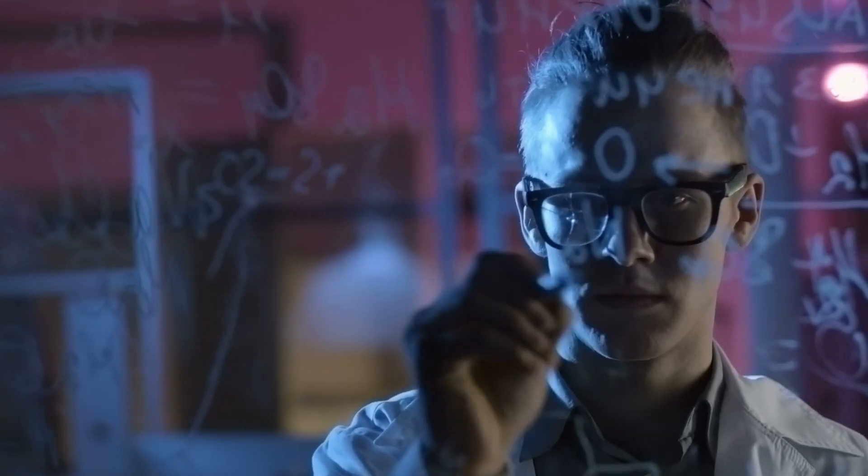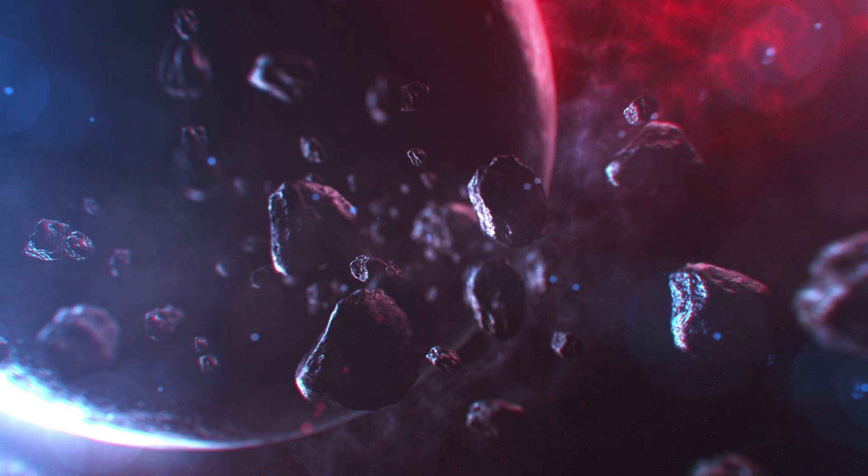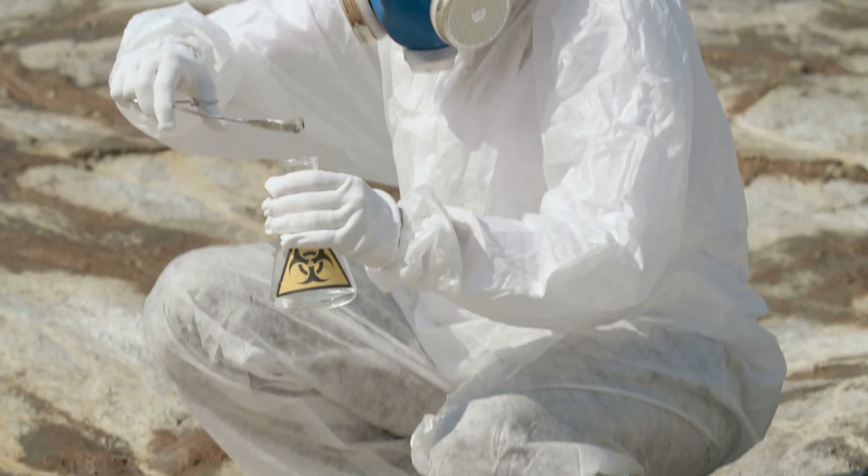One way to figure it out if an asteroid or a comet gave us our oceans is to look at the chemicals that make up these space rocks and compare them to the chemicals that make up the Earth to see which is more similar.